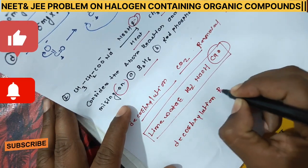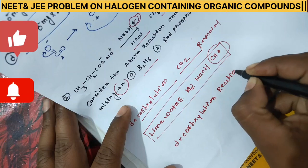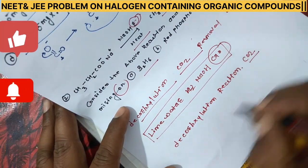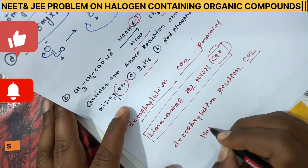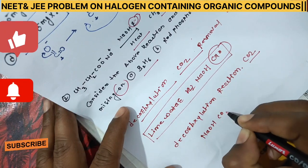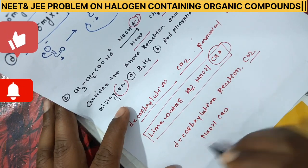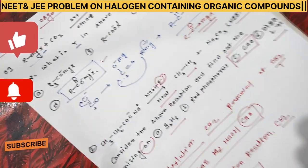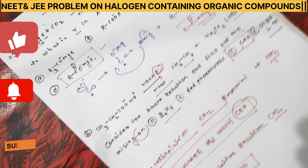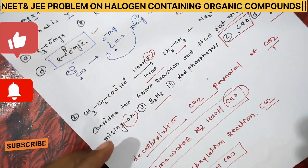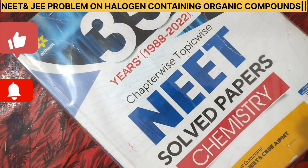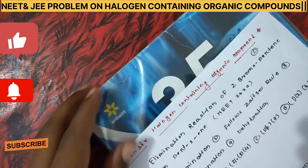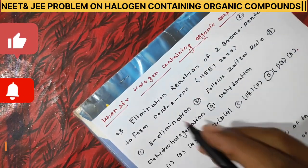In this decarboxylation reaction, removal of CO₂ takes place with the help of NaOH and CaO. This reaction is called decarboxylation. I hope you understood — that's how we solved it. Now let's move to the next question.